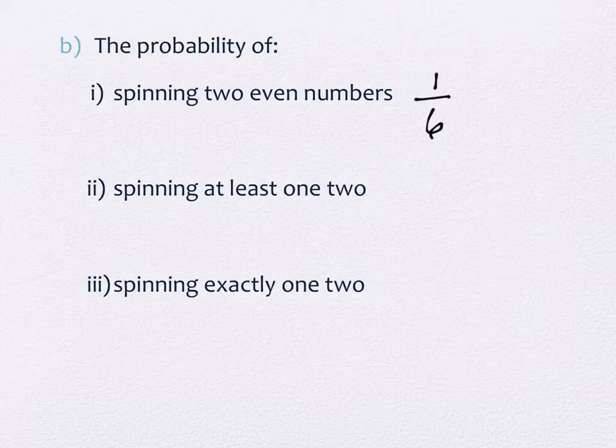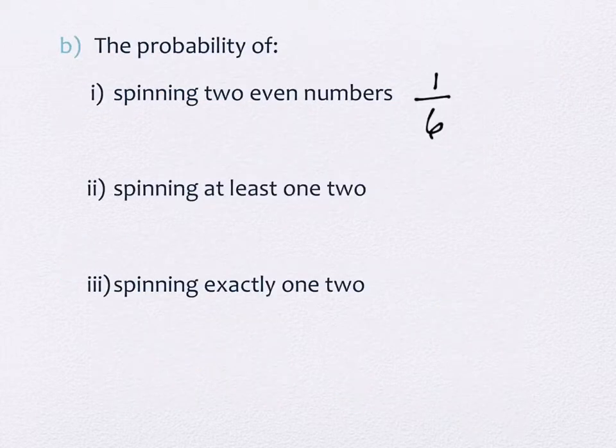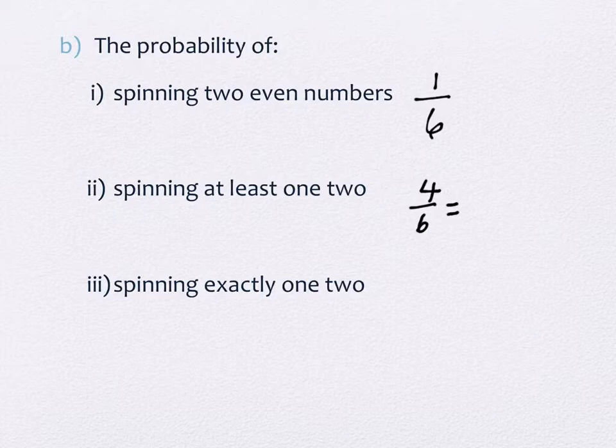Part ii, spinning at least a 1, 2. Well, which one of these have at least 1, 2? All three of those do, and that one. There's at least 1, 2 in the combinations that are listed. So how many of those had it? 4 out of 6, which reduces to 2 thirds.